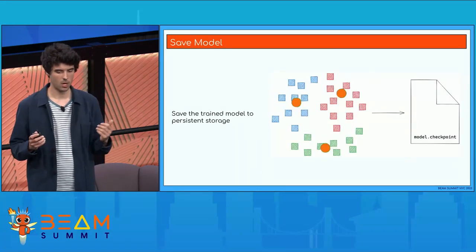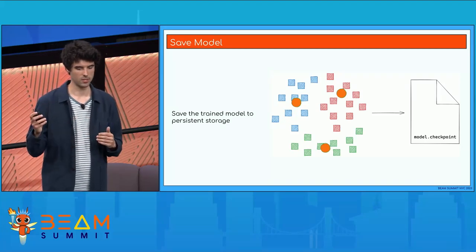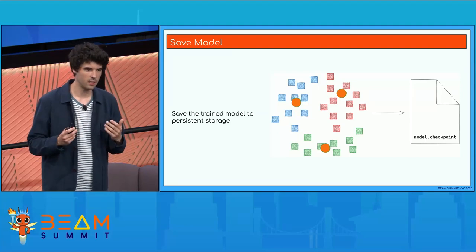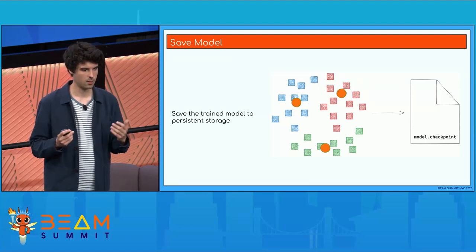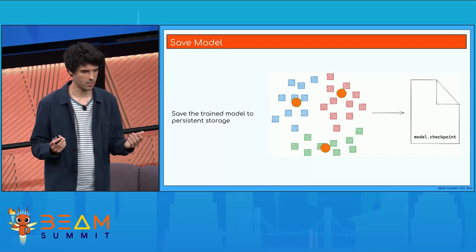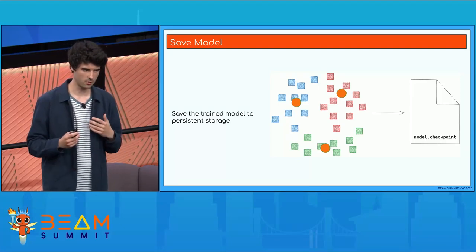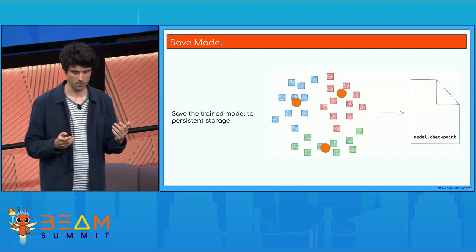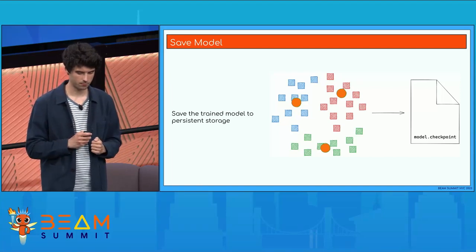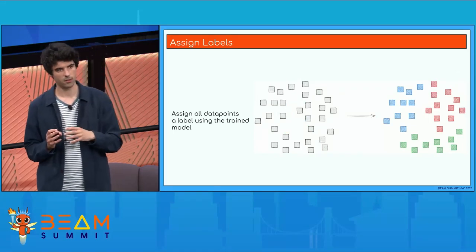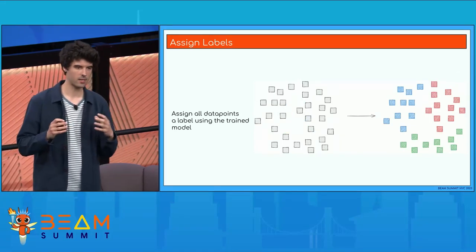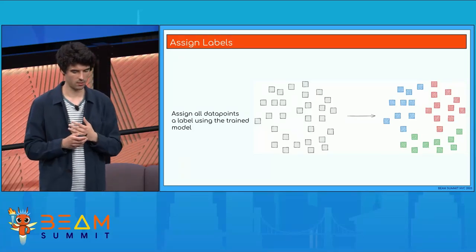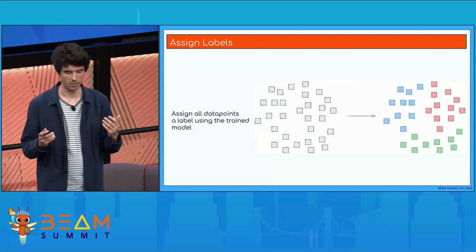As a final step, we save the model to persistent storage. The reason we do this is because clustering is typically, especially on larger data, a very expensive operation. If we have to rerun this clustering every time, we might waste a lot of compute simply recalculating clusters. So once we have calculated the clusters, it's time to actually assign a cluster to each data point, which is a very simple inference call.